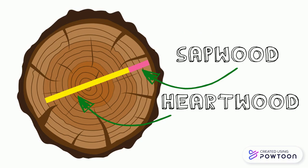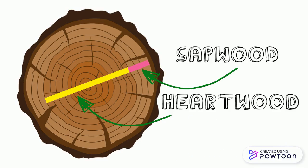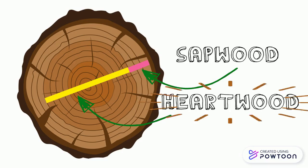Heartwood is the innermost central layer. Its function is to support the tree, and it is made of dead cells which do not transport water or nutrients. You can often tell sapwood and heartwood apart — sapwood is lighter in color whereas heartwood is darker.